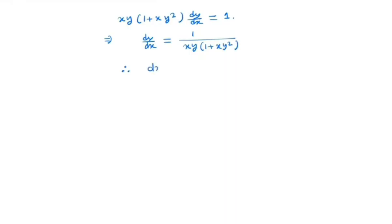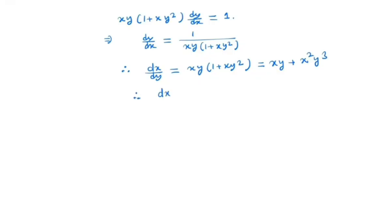So we have dx/dy equals xy times (1 plus xy squared). If we simplify this we get xy plus x squared y cubed. So we can write it as dx/dy minus xy equals x squared y cubed.